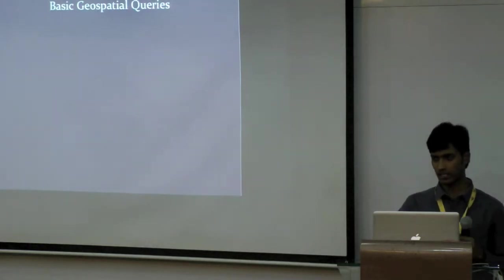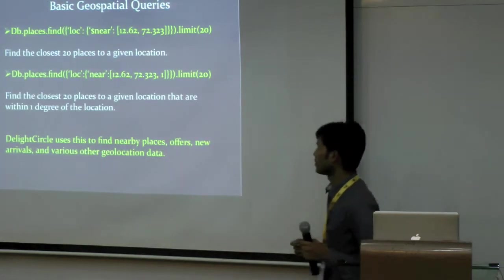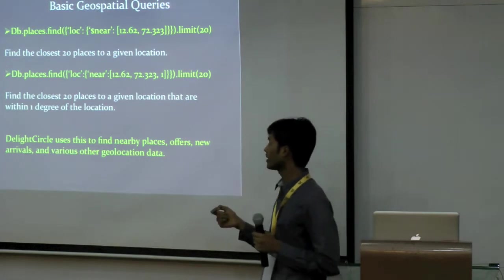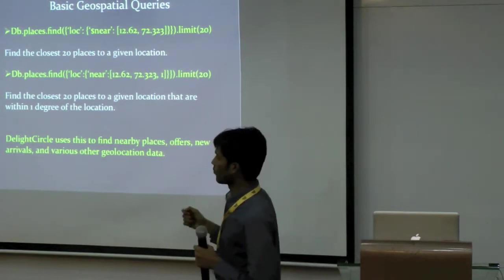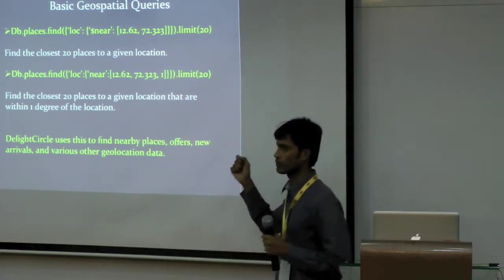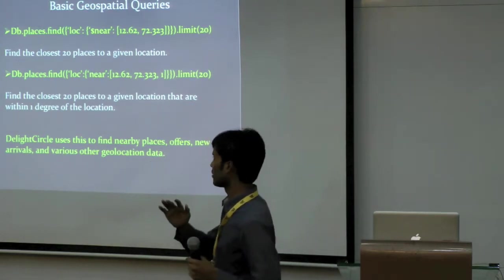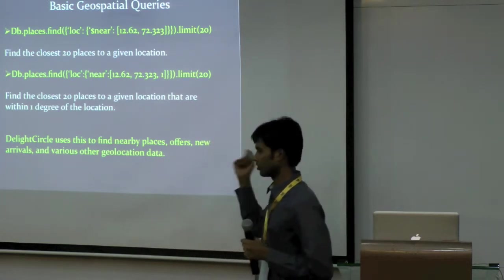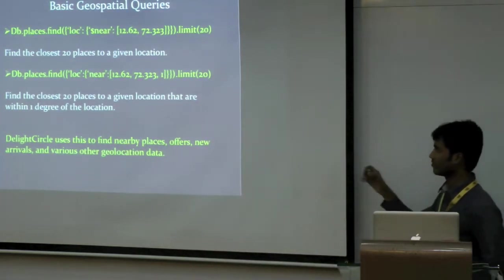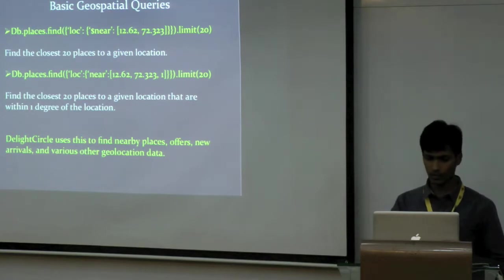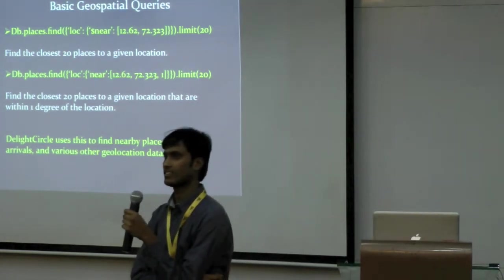I'll go with the queries now, start with the basic geospatial queries. I want to find the closest 20 places to a given location. It's very simple. You can say, db.places.find, location near the given lat-longs from which location you want to query, and then give a limit of 20. And this is the most common use case for most of the location applications. If you want to know queries to a given location that are close to one degree of the given location, then you could do single queries. And we use these as the basic queries to develop our application.